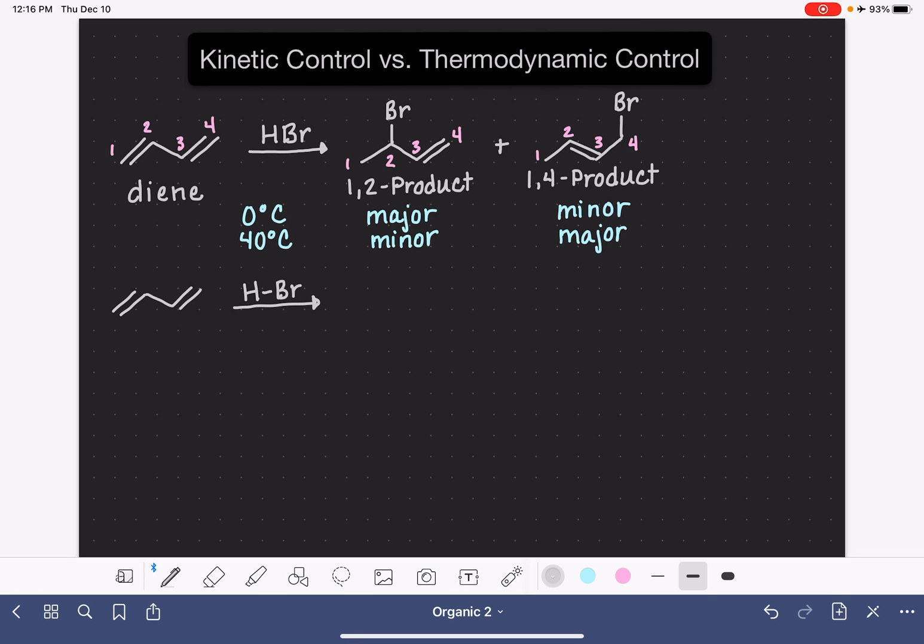In the first step of this reaction, regardless of what temperature it is, the carbon-carbon double bond reaches out and it attacks the hydrogen of the HBr and this forms a carbocation.